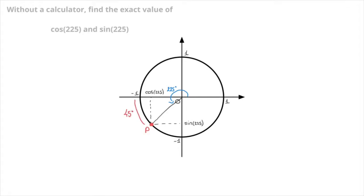We now consider the point Q, which is diametrically opposite point P on the circle — that's this point here that I'm adding in blue. Using the symmetry here, we can see that the angle that Q corresponds to is equal to the angle that separated point P from 180 degrees. That was 45 degrees, which I add right now on this unit circle. And by definition, point Q has coordinates cosine of 45 and sine of 45.